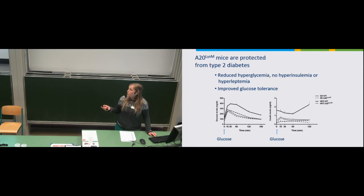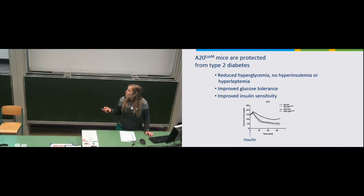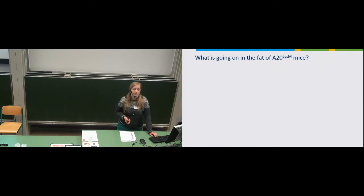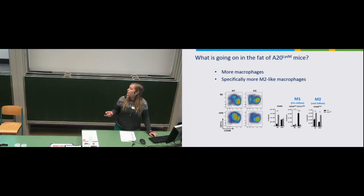When you inject insulin into these mice, the knockout mice behave normally as you would expect from a lean mouse — glucose levels quickly go down because tissues are being stimulated to take up glucose. A high-fat diet wild-type mouse is not able to do this as efficiently. Surprisingly, we saw more macrophages present in the knockout situation, also more monocytes, which is the progenitor of a macrophage. This indicates that monocytes come in from the blood to the fat tissue and then differentiate into macrophages. Looking at the M1-M2 phenotype of these macrophages...